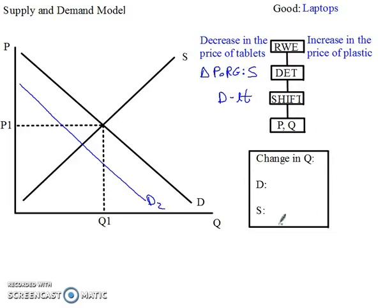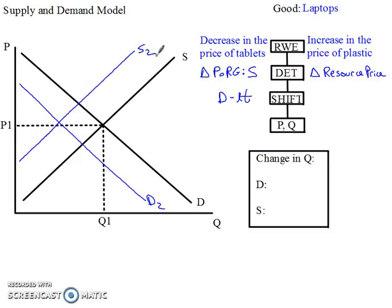Now I don't want to talk about price and quantity yet, because first I have to look at the other real world event: an increase in the price of plastic. Plastic is used to make laptops, so that's on the supply side — a change in the resource price. If the price of plastic goes up, it becomes more costly to produce laptops, and that causes the supply curve to shift to the left.